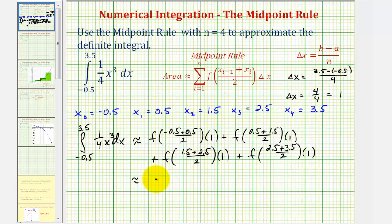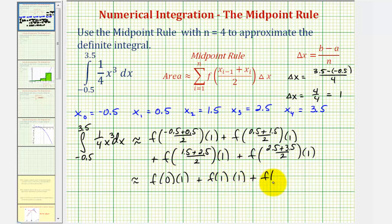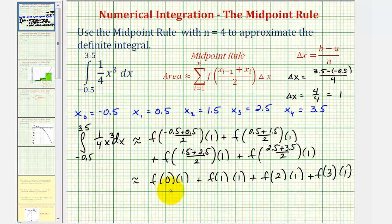Let's simplify. The first term is f of zero times one. The second is f of two divided by two, so f of one times one. The third is f of four divided by two, so f of two times one. And finally, f of six divided by two, or f of three, times one. Now we'll find these function values using f of x equals one-fourth x cubed, then find the products, and then the sum.